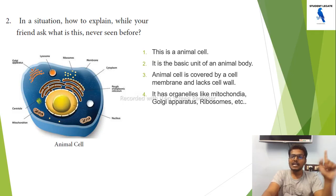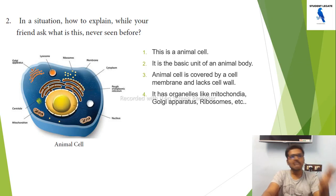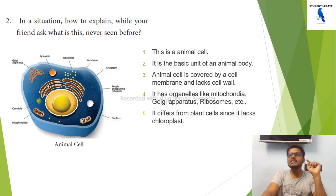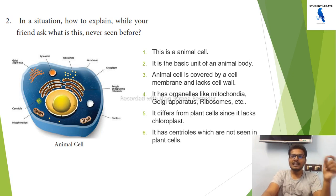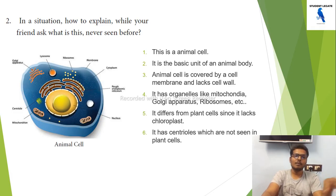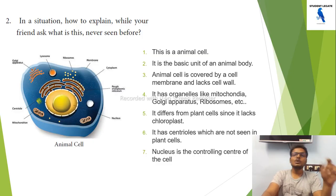Animal cells have organelles like mitochondria, Golgi apparatus, and ribosomes. They are different from plant cells since they lack chloroplasts. Animal cells also have centrioles, which are not seen in plant cells.